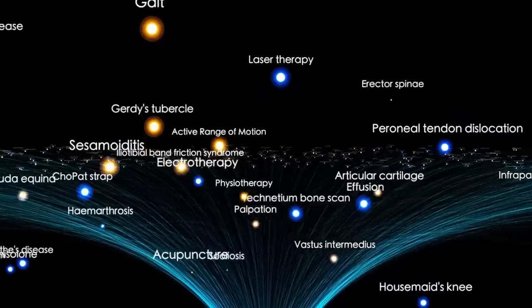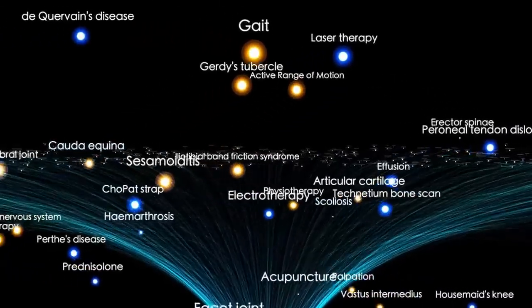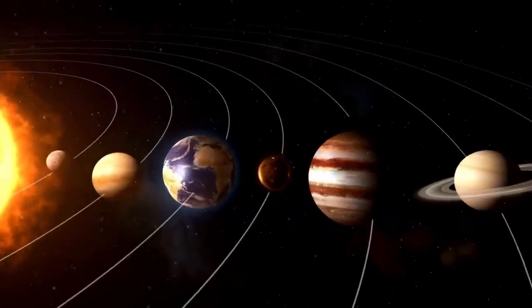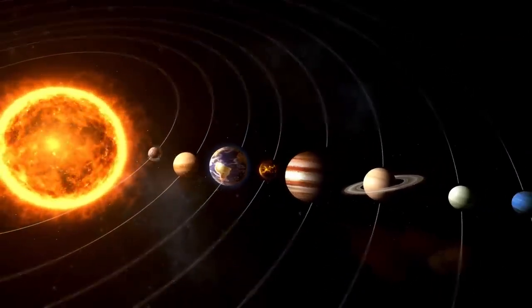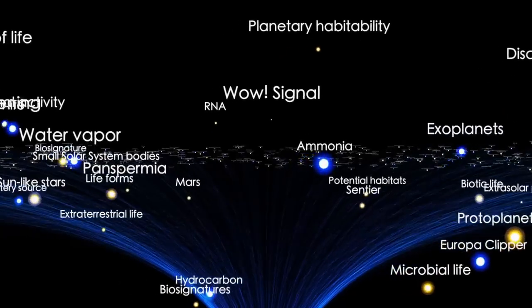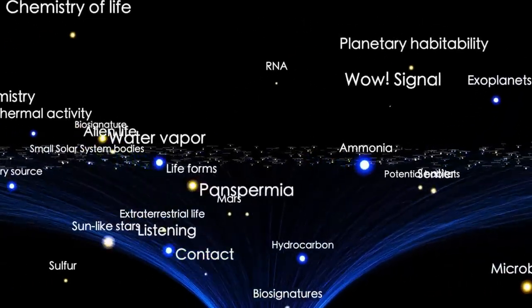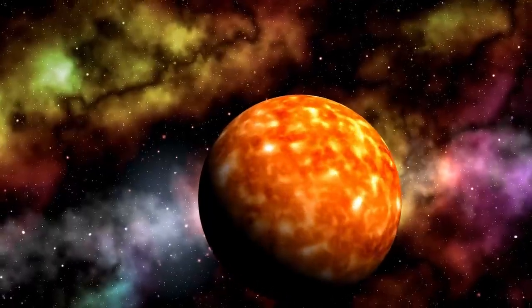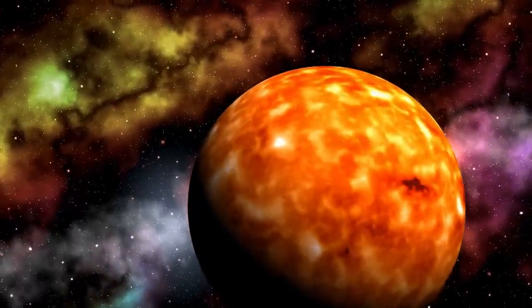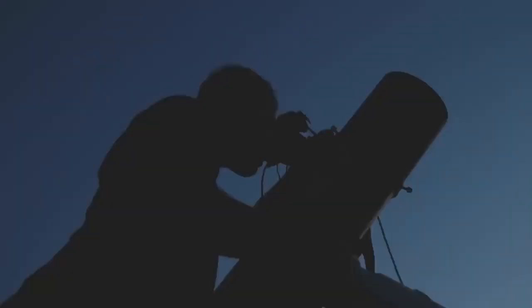Here's the thing. When we observe stars, we're not actually seeing them as they are in the present moment. The light we see from stars like Betelgeuse takes time to travel to Earth. Betelgeuse, one of the most fascinating stars in our night sky, is located approximately 725 light years away from Earth. This means that the light we observe from it today actually began its journey toward us around 725 years ago.